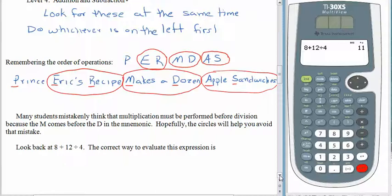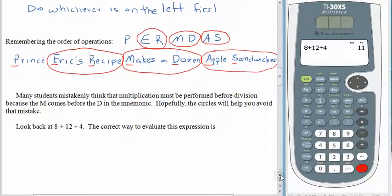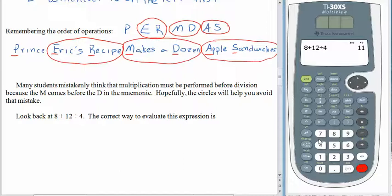Let's go back to the problem we had at the beginning of this lesson. We were looking at 8 plus 12 divided by 4. Now we know that division has a higher priority than addition. So we would say 12 divided by 4 is 3, and then add in the 8, and the answer is 11. That's exactly what your calculator did as well.